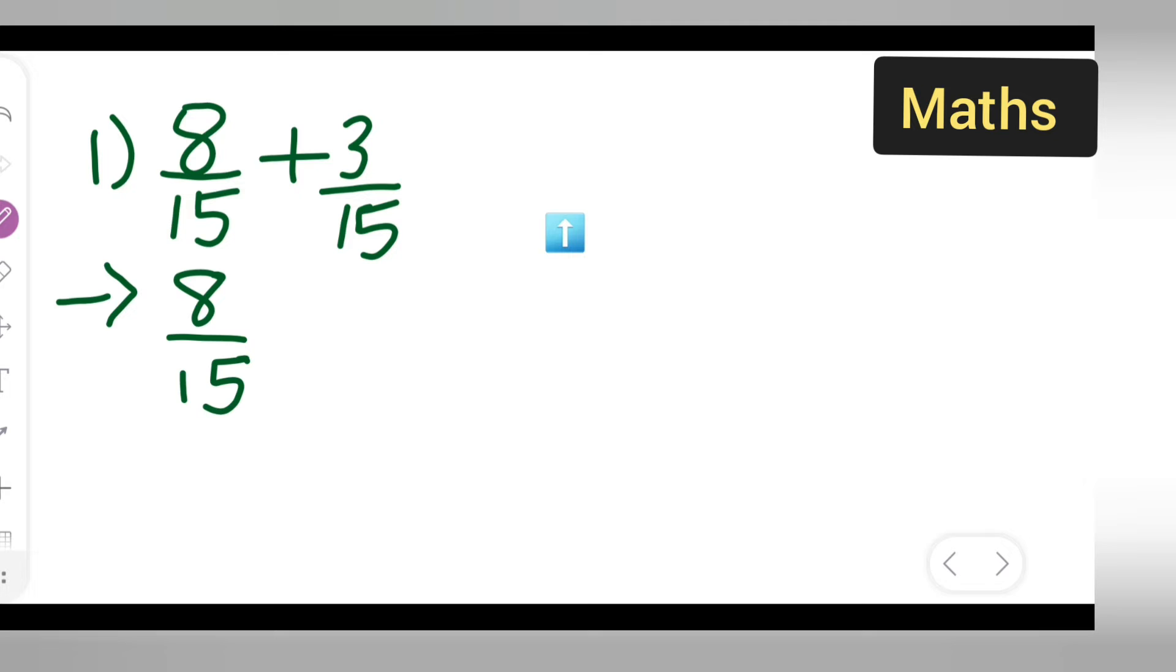8 upon 15 plus 3 upon 15. Now since the denominator is the same, what you all are going to do is add 8 plus 3. Write it as it is: 8 plus 3. Now take this 15 to be the common denominator in both. So write down upon 15.